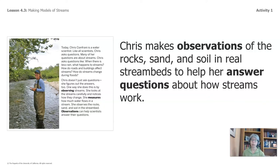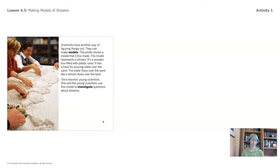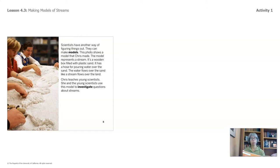Chris makes observations of the rocks, sand, and soil in real stream beds to help her answer questions about how streams work. Scientists have another way of figuring things out — they can make models. This photo shows a model that Chris made. The model represents a stream. It's a wooden box filled with plastic sand. It has a hose for pouring water over the sand. The water flows over the sand like a stream flows over the land. Chris teaches young scientists, and she and the young scientists use this model to investigate questions about streams.